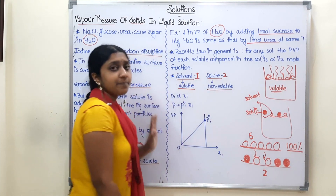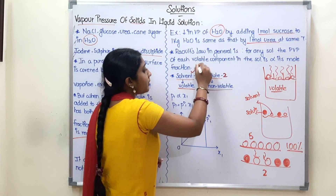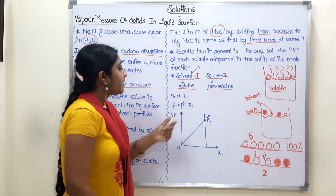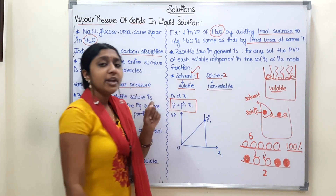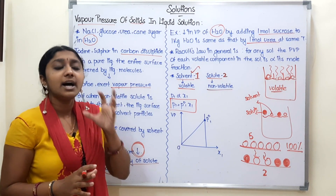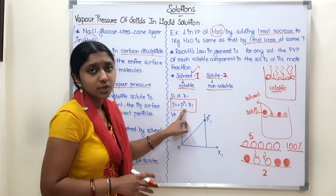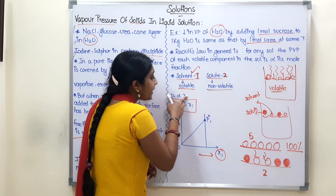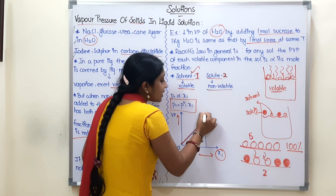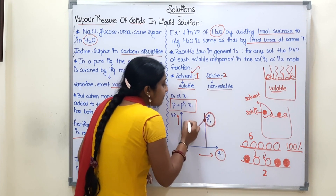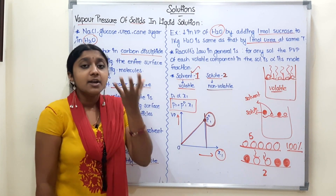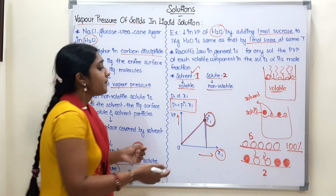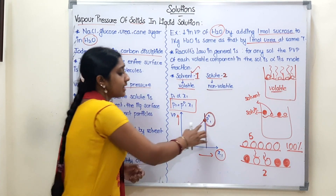Solute is non-volatile and solvent is a volatile liquid. So when we apply Raoult's law, we use the volatile solvent component. The partial vapor pressure P1 is directly proportional to its mole fraction x1. The proportionality constant is P°1, which is the vapor pressure of the pure solvent. That is the maximum value — when the mole fraction of solvent is highest, vapor pressure is at its maximum.